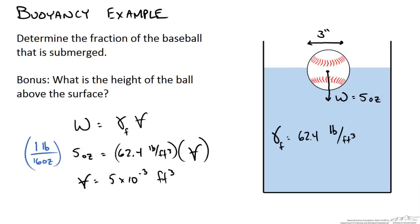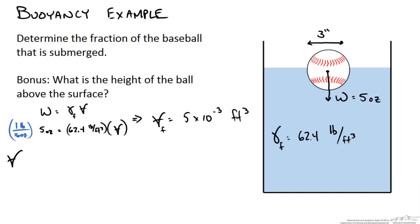So how does this volume of our displaced fluid relate to the actual volume of our baseball? The volume of a sphere is 4 thirds pi r cubed, and we know our diameter is 3 inches.